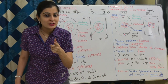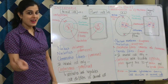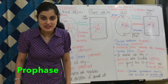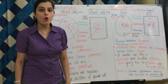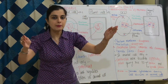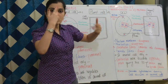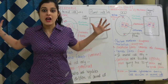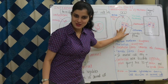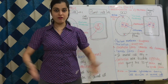Prophase is the longest phase of karyokinesis. What are the changes taking place? Nuclear membrane disappears. Nucleolus disappears. Your chromatin fibers condense into chromosomes. Spindle fibers are formed.